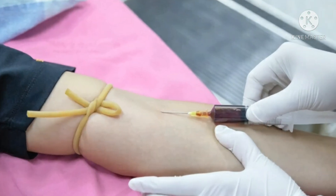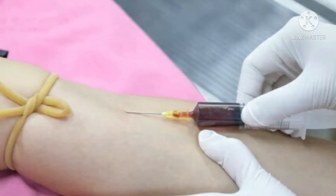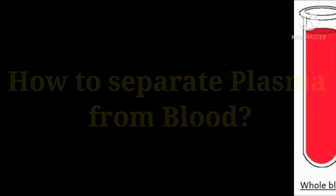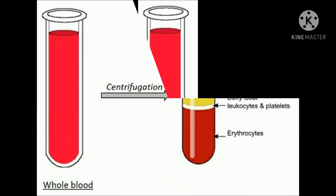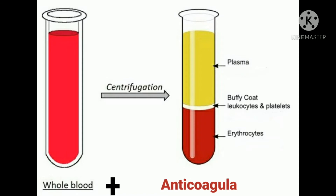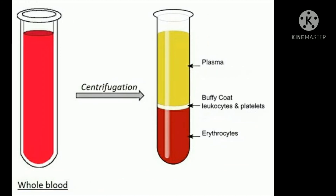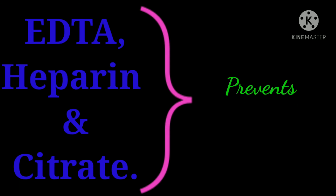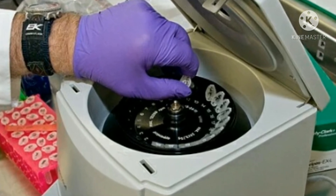Most laboratory testing for clinical purposes is done on samples obtained from blood. Plasma can be separated from a whole blood sample by centrifuging the blood after adding an anticoagulating agent. Common anticoagulating agents are EDTA, heparin, and citrate, which prevent clot formation. Centrifugation separates the blood components by weight, size, and density.